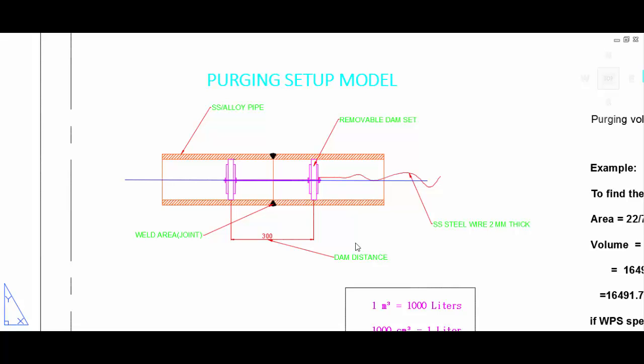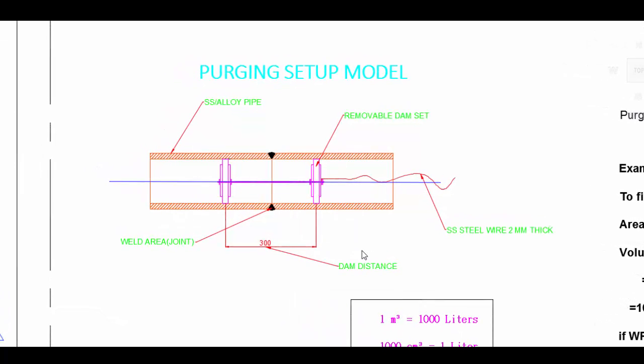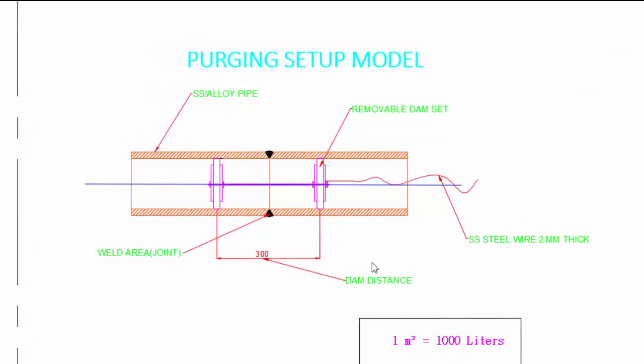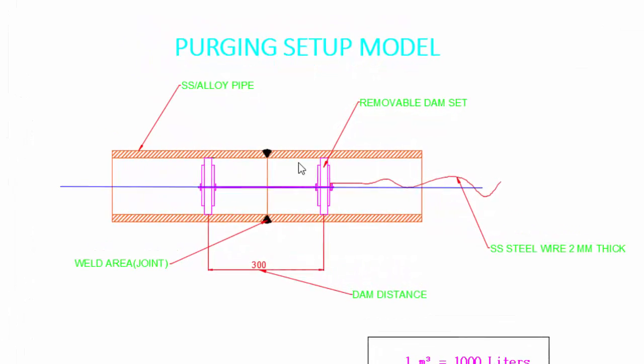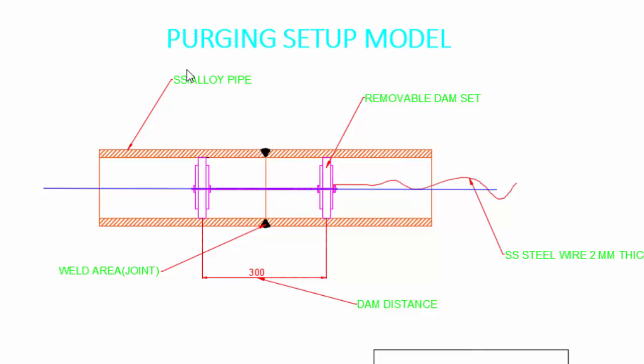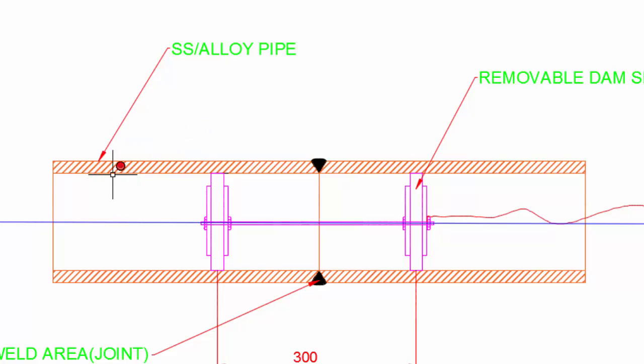Hi friends, this video explains purging volume calculation. You are seeing one purging setup model. In this model, this is our pipe. In this pipe, this is the weld area for SS or alloy pipe where we will give the purging to avoid oxidation.